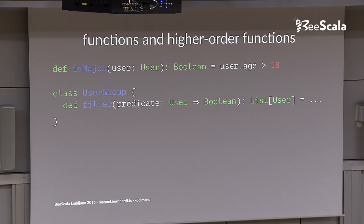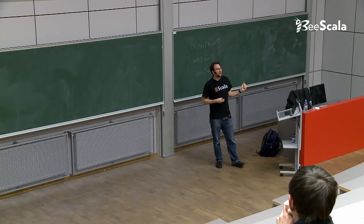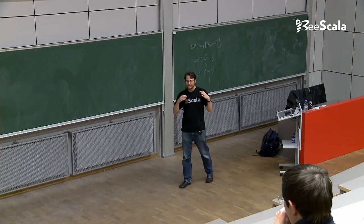So now that I have this higher order function, what I can do in Scala, I can just pass in my isMajor function reference. The compiler knows isMajor, it has the right type, it goes from user to Boolean, I can use it. And so in Scala functions are first class citizens of the language. They're objects that you can pass around.